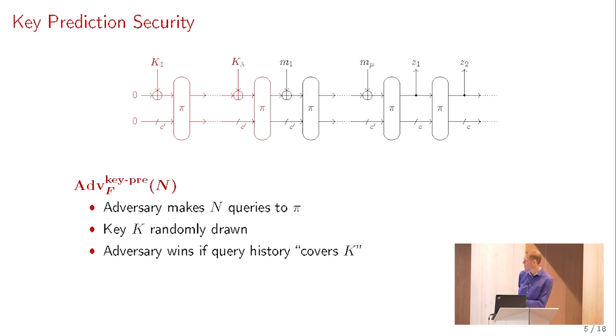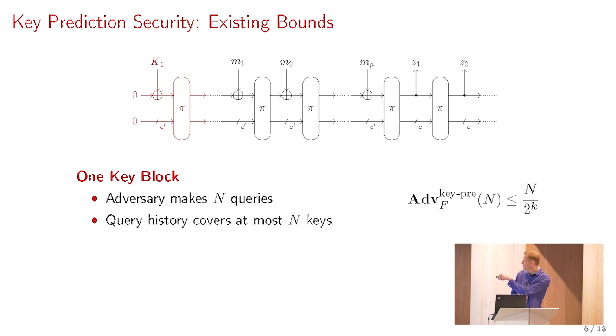We consider the following game for an attacker. The attacker can make primitive queries, evaluations of pi, namely N of them. Then, we randomly select a key. And the attacker wins if the query history, so all queries that the attacker made, cover the evaluation of the key absorption here. Indeed, once the key is selected, and you absorb the key here, you make lambda permutations of pi. And the attacker basically wins the game if these lambda queries are already in its query history.